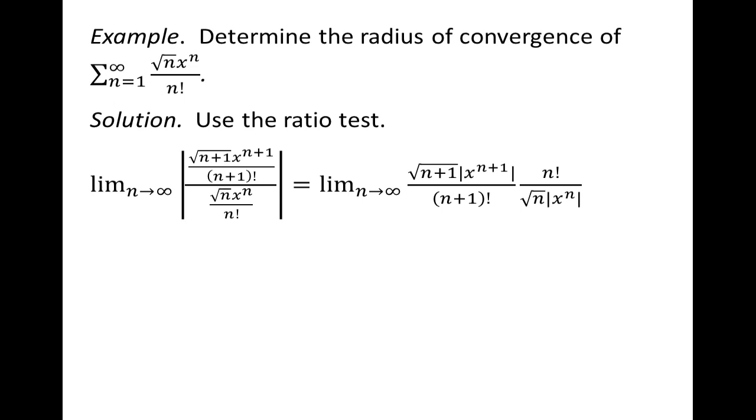This is going to become a rather familiar maneuver. We're dividing a fraction by a fraction, so you take the denominator, take its reciprocal, n factorial over square root of n, x to the n, and leave the numerator alone.